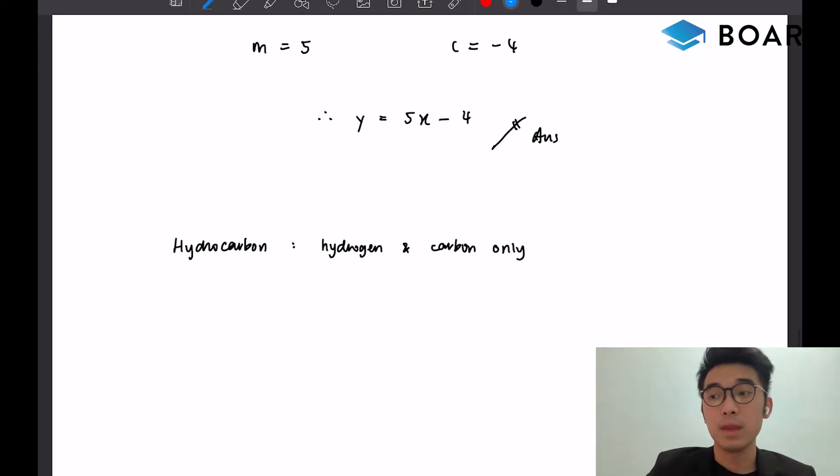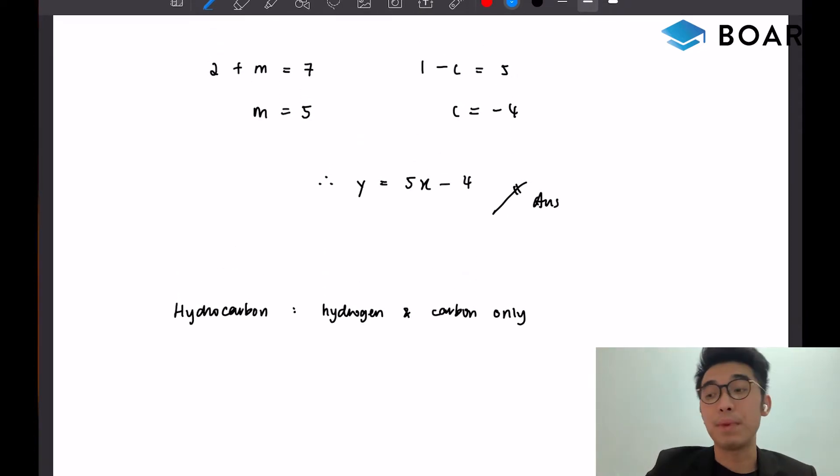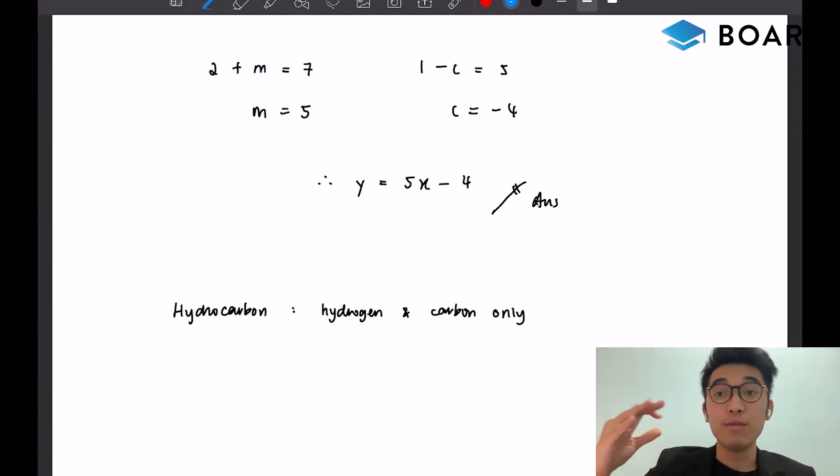Now, how do we know that the percentage by mass of hydrogen is always the same? This has something to do with empirical formula because empirical formula is a formula which only contains the simplest whole number ratio of the chemical compound, as opposed to molecular formula which is the actual number of each atom in the compound.